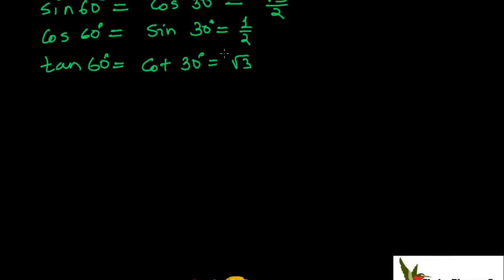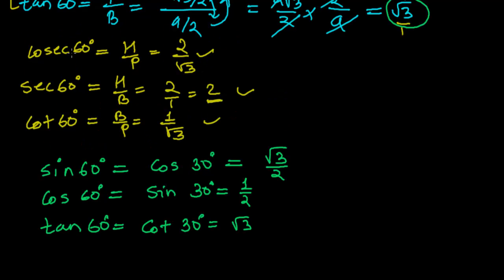We can see a pattern here: when sin is 60, cos is 30, and when cos is 60, sin is 30. In the same pattern, when sin is 1 degree, cos will be 89 degrees; when sin is 90, cos is 0; when sin is 50, cos is 40. This complementary relationship will be discussed in more detail in another video.